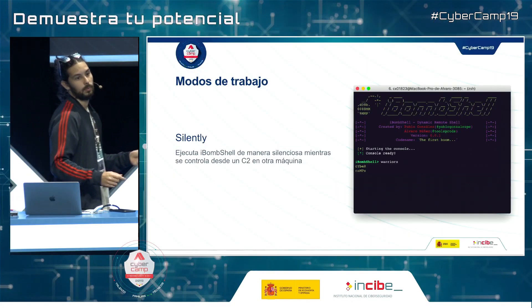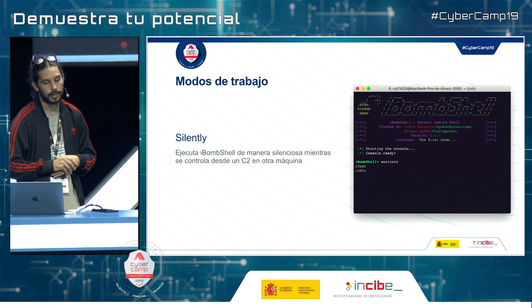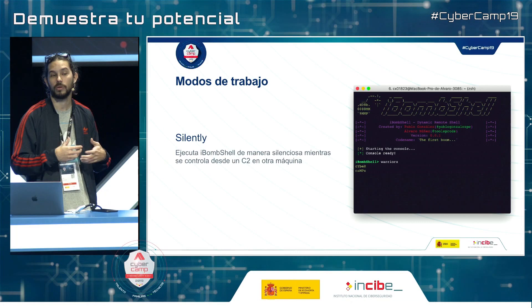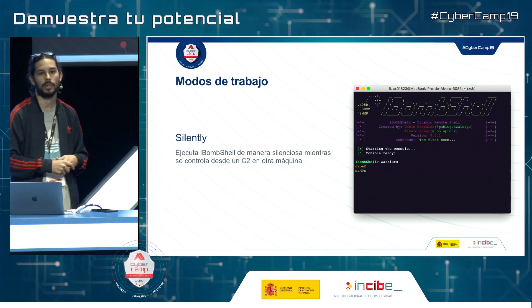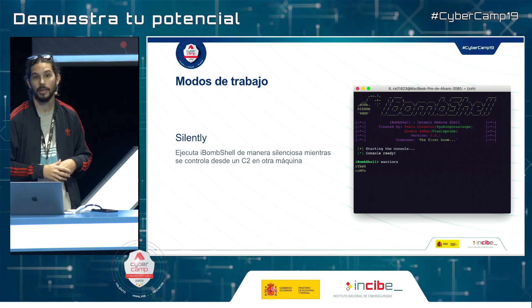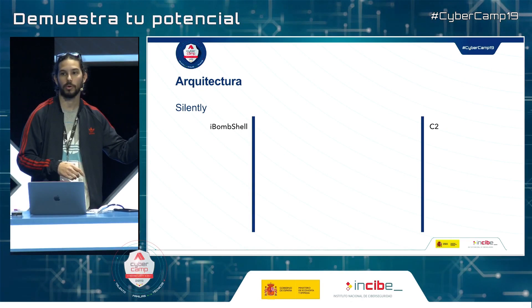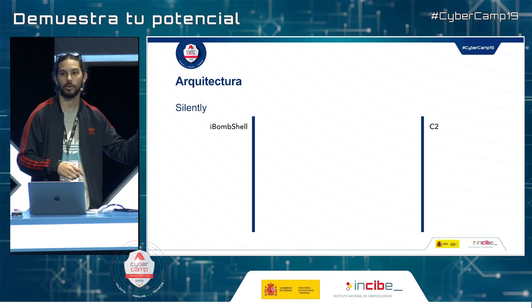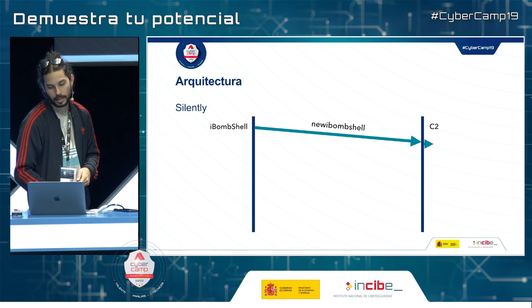The second way of working is 'silently' mode, where we can make the most of the functionalities. The first way is for downloading tools from Windows without installing anything. In the silently mode, we ask: if in PowerShell I can have a console, why not control it remotely? This is why we also need to create a command and control, done in Python. On one side, iBombshell is already integrated and connected to the C2, registering the IP.